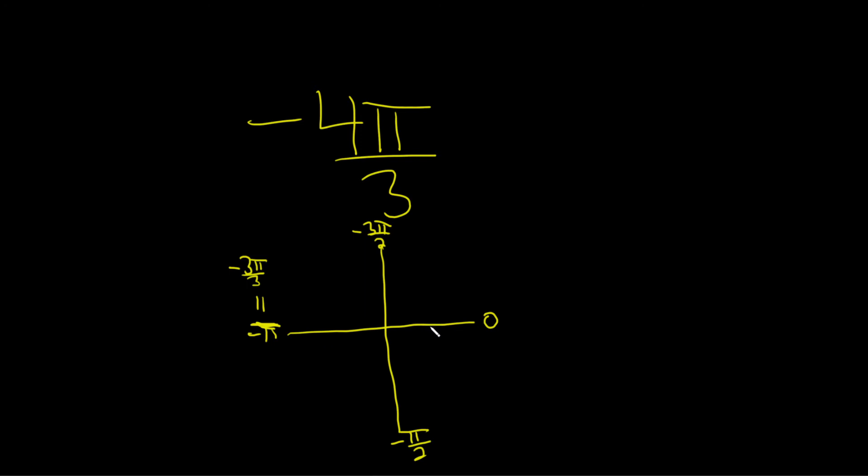So where is negative 4 pi over 3? Well it's just a little bit more this way, so it would look something like that. That angle there would be negative 4 pi over 3.